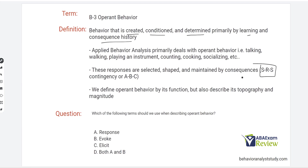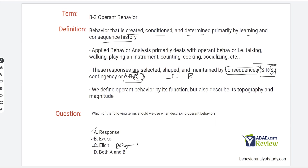Notice the difference: we have our SR contingency, and now we add consequences — ABC. Compare that to just the SR without a consequence. The key difference between respondent and operant is really these consequences which maintain the behaviors. We define operant behavior by its function, but also describe its topography and magnitude. Typical consequences are punishment and reinforcement: punishment decreases future behavior, reinforcement increases future behavior. Which terms should we use when describing operant behavior? Response — yes. Evoke — yes. Elicit — no. Elicit and reflex have to do with respondent; response and evoke have to do with operant.